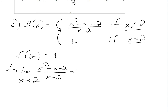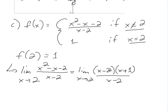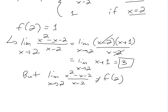We factor the numerator: x²-x-2 = (x-2)(x+1), since -2 and +1 multiply to -2 and add to -1. So the limit as x approaches 2 of (x-2)(x+1)/(x-2) simplifies to the limit of (x+1) as x approaches 2, which equals 3. But f(2)=1 and the limit is 3, so they are not equal — requirement three fails.